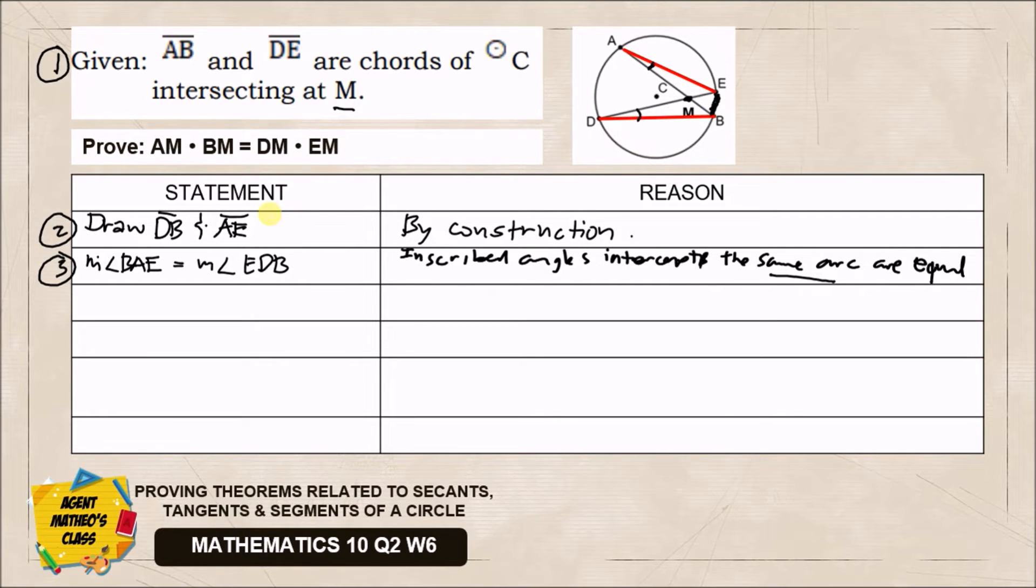What will be our fourth statement? Normally in our previous proofs, we look for possible triangles that could be congruent or similar. With this figure, there are hints of triangles that could be similar because we could say this angle and this angle are also equal.